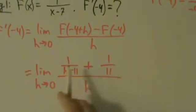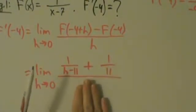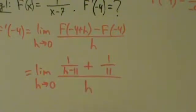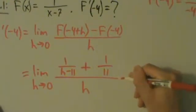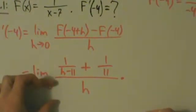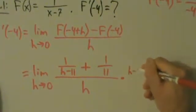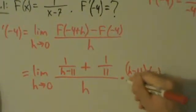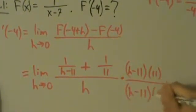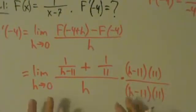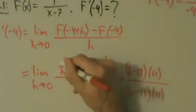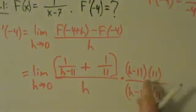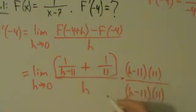When dealing with complex fractions, we want to simplify so we don't have a complex fraction anymore. We can get a common denominator on the top, or take a shortcut: we have h minus 11 in one denominator and 11 in the other, so let's multiply the big top and big bottom by h minus 11 times 11 — essentially finding the least common denominator.